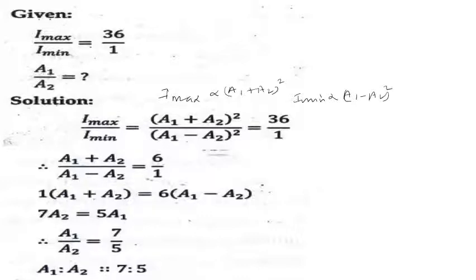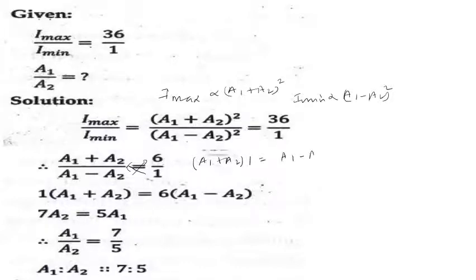If i-maximum by i-minimum is equal to 36 by 1, then (a1 plus a2) all square over (a1 minus a2) all square equals 36 over 1. Taking square roots: (a1 plus a2) over (a1 minus a2) equals 6 over 1, so 6a1 minus 6a2 equals a1 plus a2.